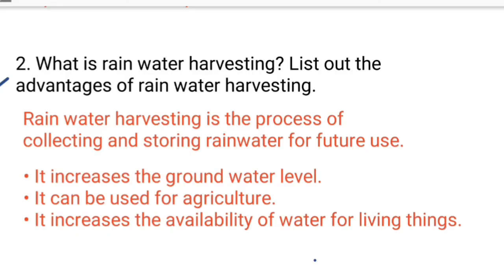Second one: what is rainwater harvesting? List out the advantages of rainwater harvesting. Rainwater harvesting is the process of collecting and storing rainwater for future use. Advantages: it increases the groundwater level; it can be used for agriculture; and it increases the availability of water for living things.